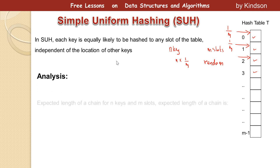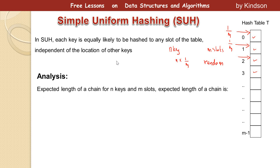The analysis of simple uniform hashing says that the expected length of a chain, given n keys and m slots, will be given by n over m. This is because each key contributes a probability of 1 over m to any given slot, and summing over all n keys gives n over m.